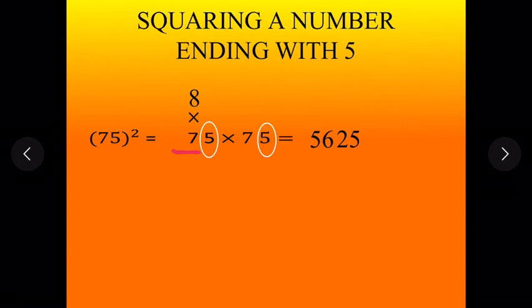Let's solve one more. 95 square. So 95 square is 95 multiply by 95. So 5 multiply by 5 is 25.